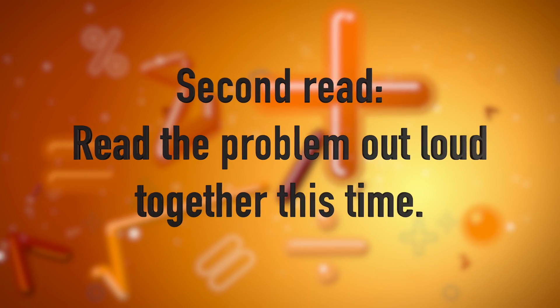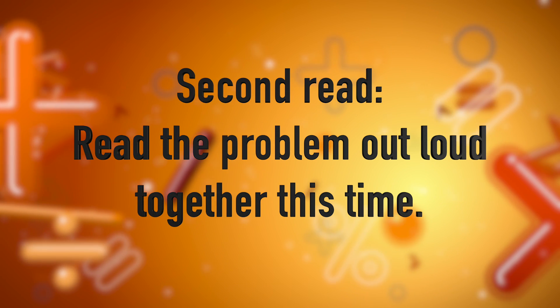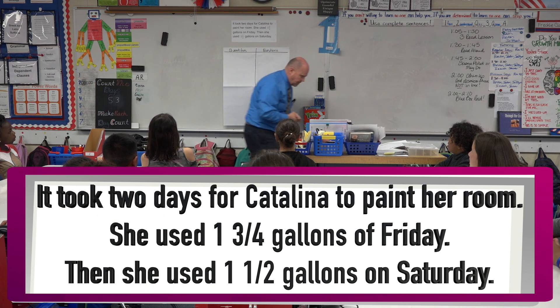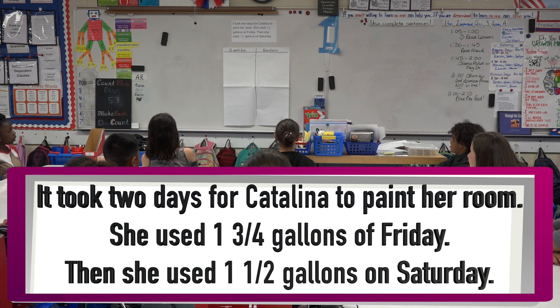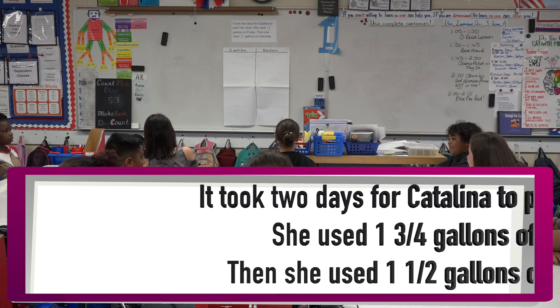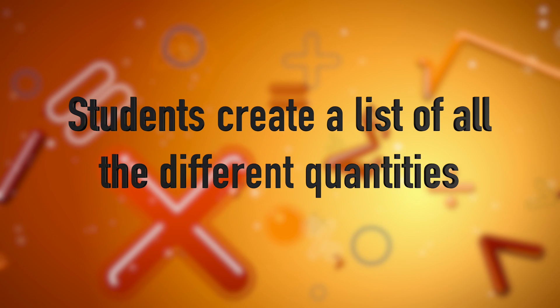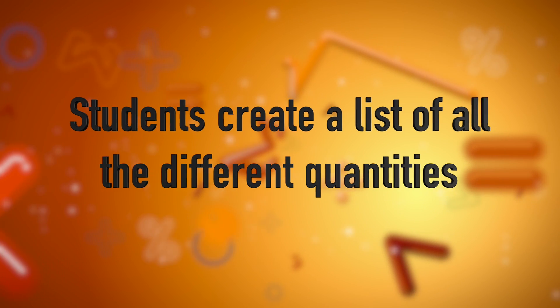We're going to read it a second time. This time, we're going to read it in unison as a whole class. It took two days for Catalina to paint her room. She used one and three-fourths gallons on Friday. Then she used one and a half gallons on Saturday. Beautiful. With your same partners, I want you to identify all the different quantities you see in this story. Quantity is another way of saying amounts. What are all the different amounts or quantities you see in this story? Go.